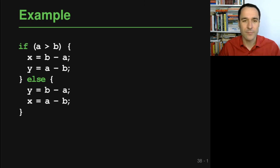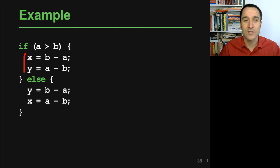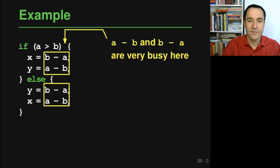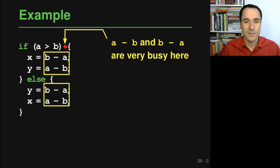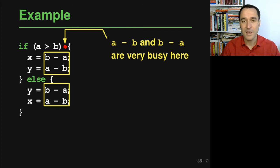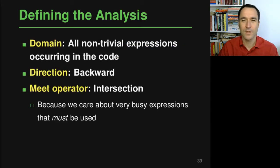Consider a concrete example with an if-then-else: depending on some condition we write values into x and y, or into y and x. The interesting point is that expressions b-a and a-b are very busy right before entering the if — at that point, no matter which branch is taken, both expressions will be used and neither a nor b will be redefined in the meantime.